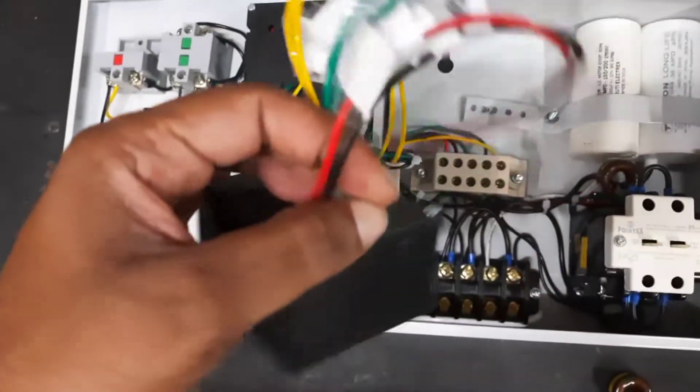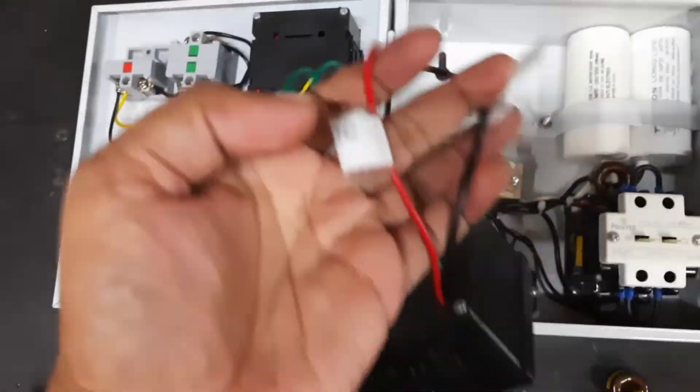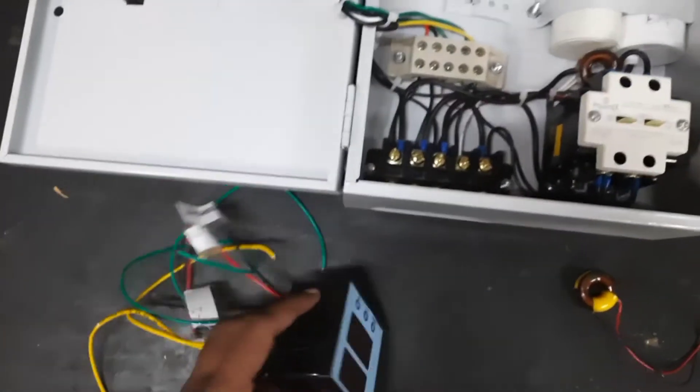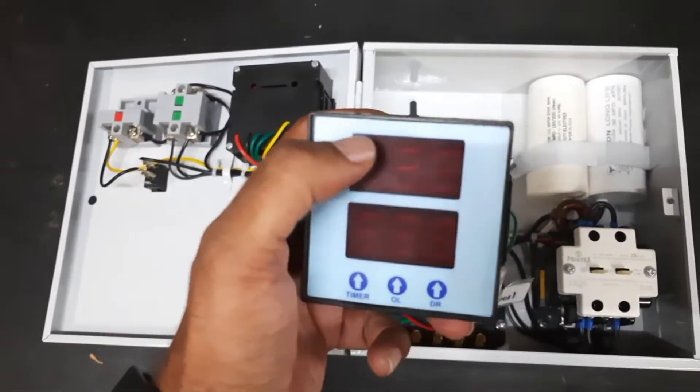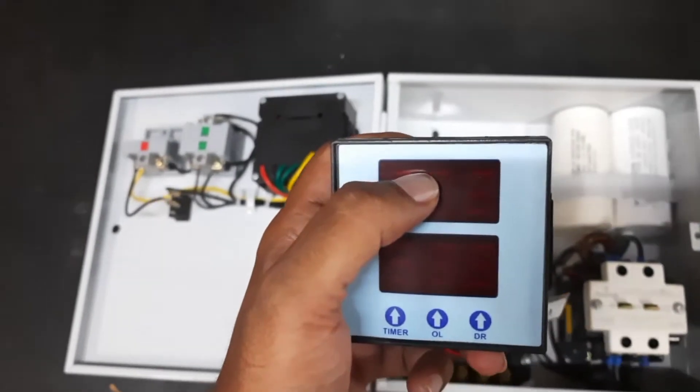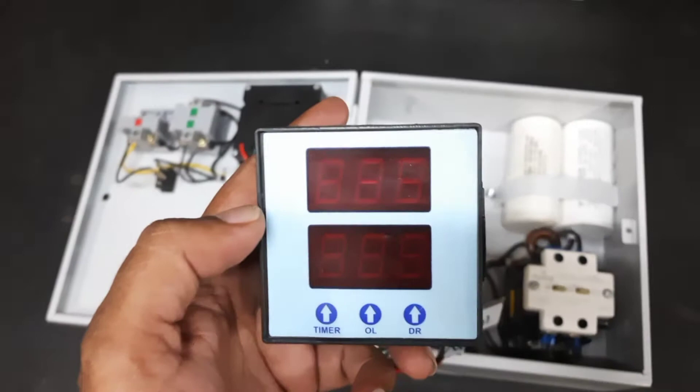These red and black wires are phase and neutral. This is a single-phase meter. The upper display will show the ampere and the lower display will show the voltage.